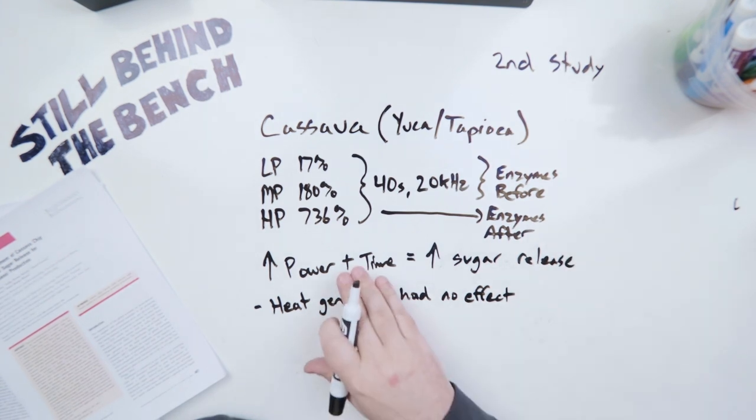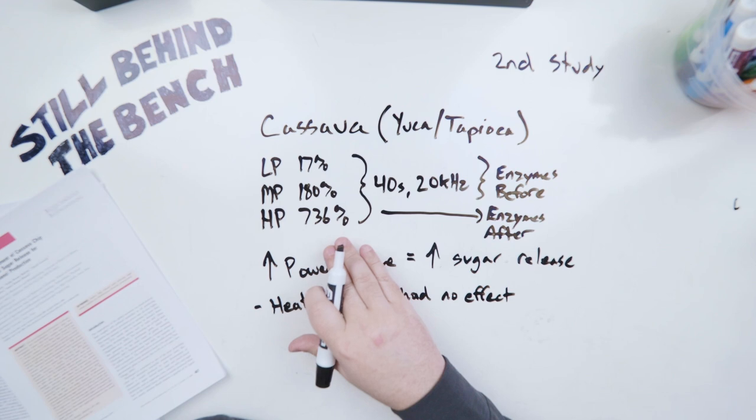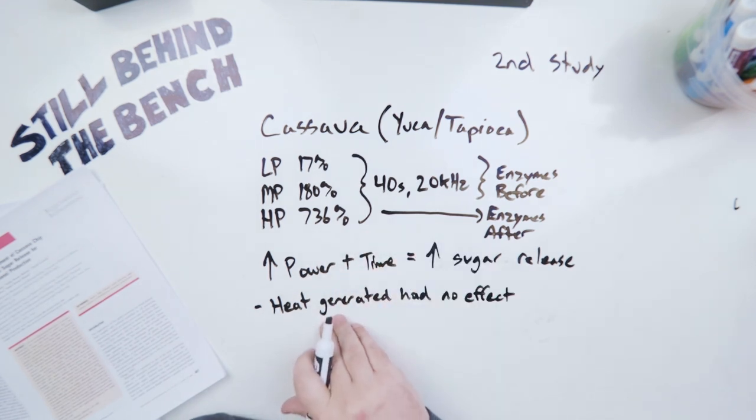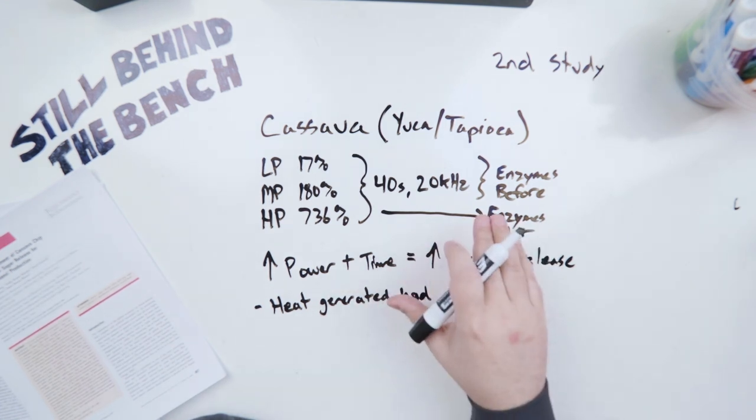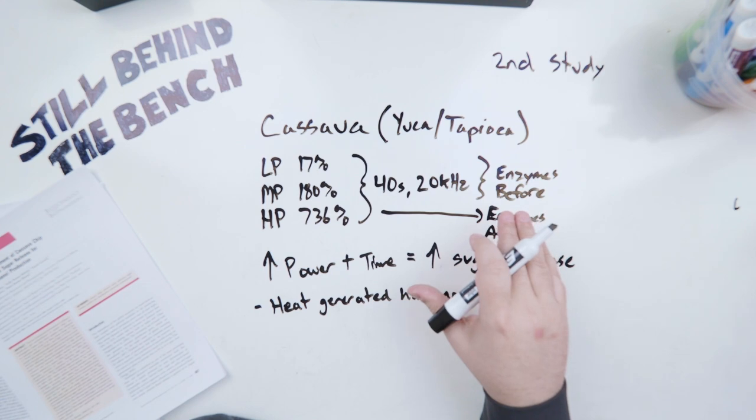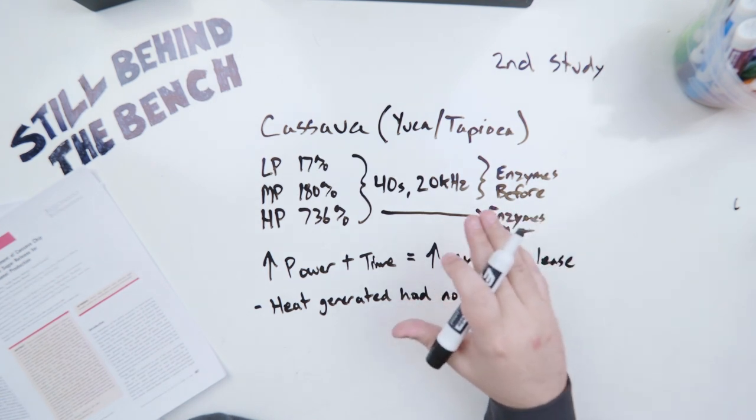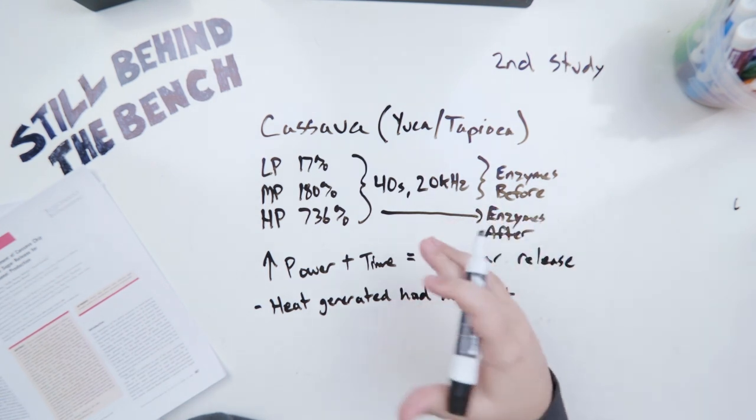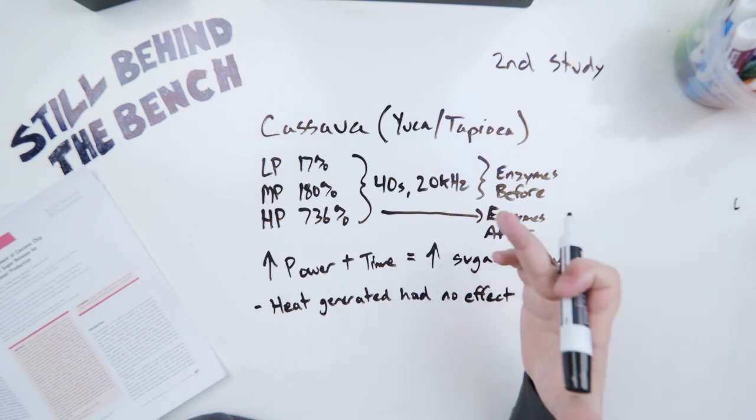They also showed that when you're putting in high power you're going to generate heat. They did heat testing as well to determine whether or not the heat was playing a role and it showed it had no effect. So this one's particularly interesting if you make something like potato vodka because you might be able to increase the amount of starches you're getting out of a potato by a huge amount. Let's look at the next study.